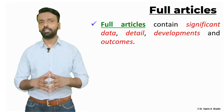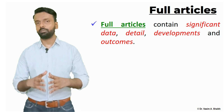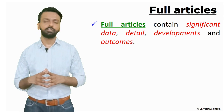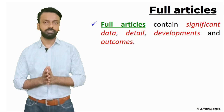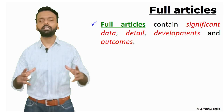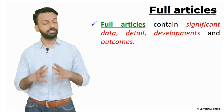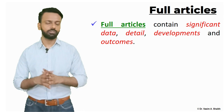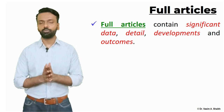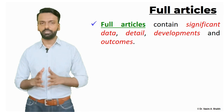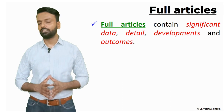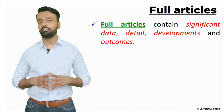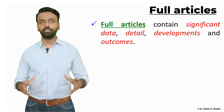The third type is the full-length article. In a full-length article you have very significant data which you are trying to publish. It contains a lot of details, developments, and outcomes representing research done over a few months or years. It has very detailed information and is generally around 10 to 15 pages, though this varies by journal, as each journal has its own requirements for word count and page limits.